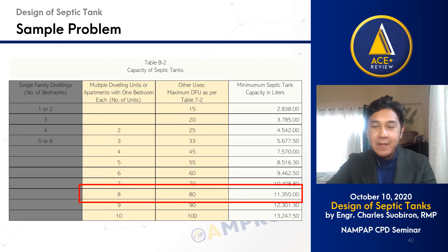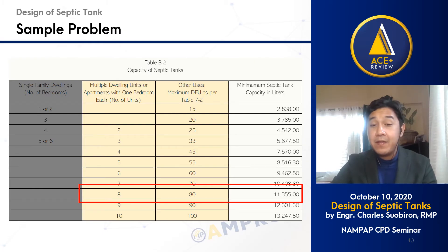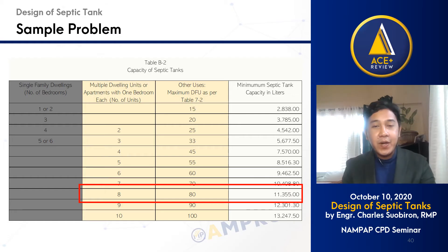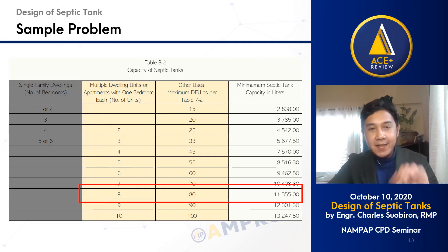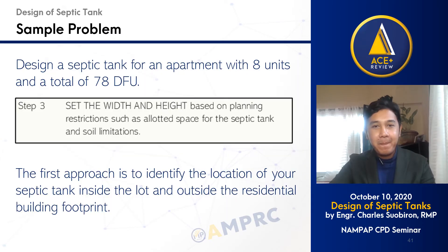Using column 3, given 78 DFU, the minimum septic tank capacity falls in the row of the maximum 80 DFU. Hence the minimum septic tank capacity is also 11,355 liters or 11.355 cubic meters, as highlighted in the red box. Because the minimum septic tank capacity from column 2 and column 3 are the same — 11.355 cubic meters — therefore, the minimum septic tank capacity for our apartment is 11.355 cubic meters. Note: if the capacities from columns 2 and 3 are different, choose the higher minimum capacity.